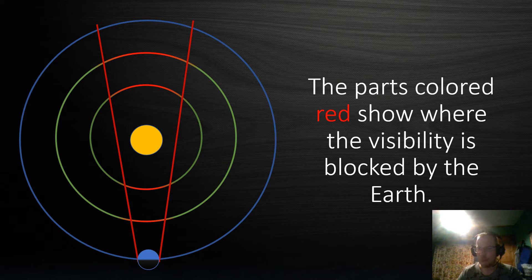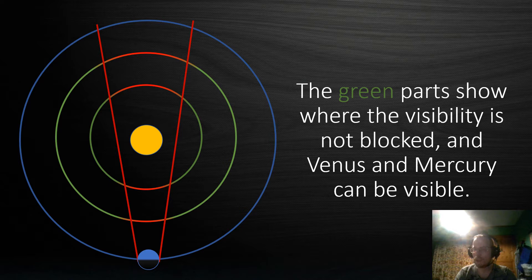Now let's go into what these colors mean. The red parts show where the visibility to Venus and Mercury is blocked by the Earth. Whereas the green parts show where the visibility is not blocked and Venus and Mercury can be visible.